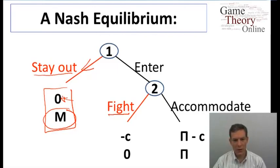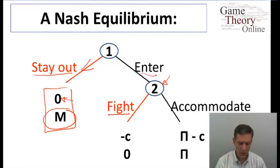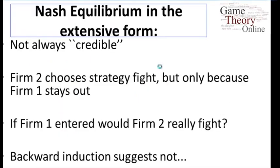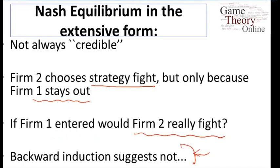Is this a sensible prediction? It depends on our beliefs. Do we really believe the second firm would fight if the first firm entered? This is a Nash equilibrium, but Nash equilibria are not always credible. The second firm's intended strategy is to fight if the first firm enters — that threat scares the first firm away. But is that a credible threat? If the first firm stays out, the threat is never tested. If we all believe that's going to be their strategy, firm one staying out is the best thing they can do. But if firm one actually entered, would firm two really fight? Backward induction is going to suggest not.